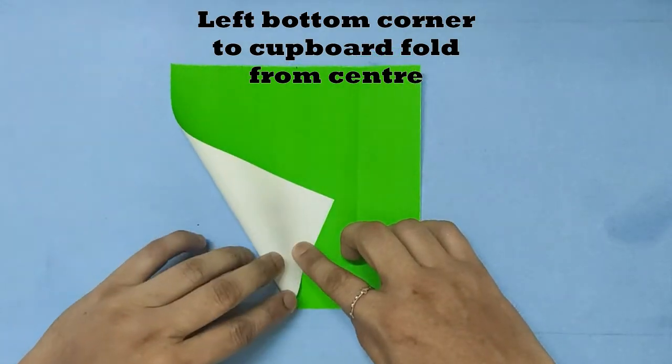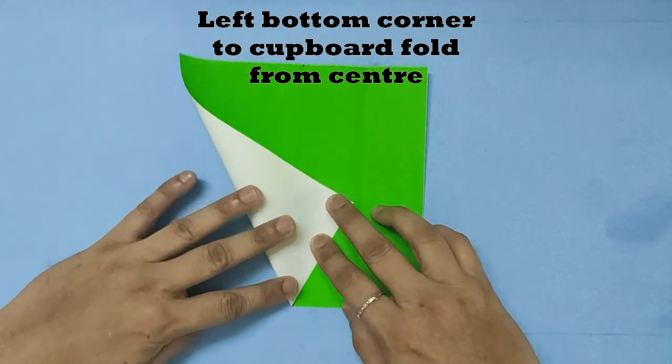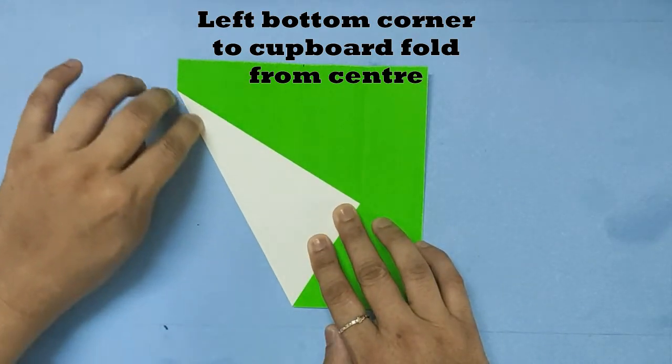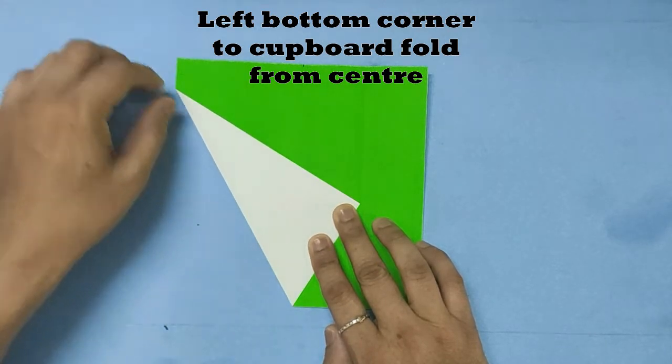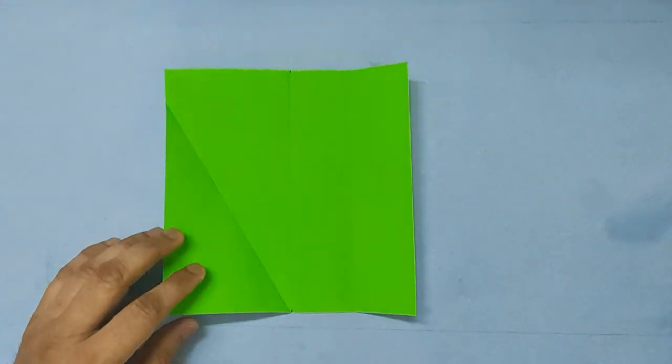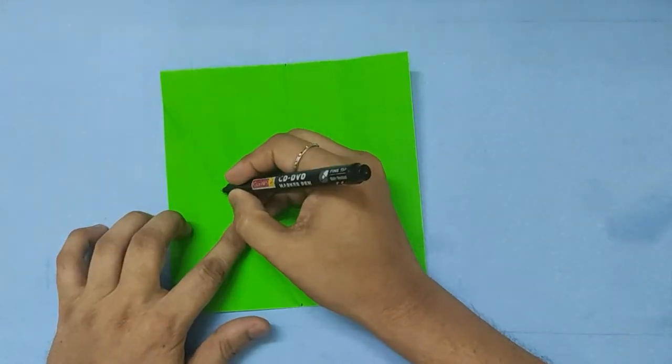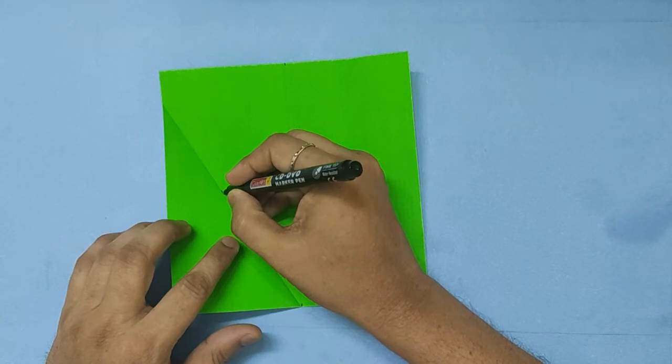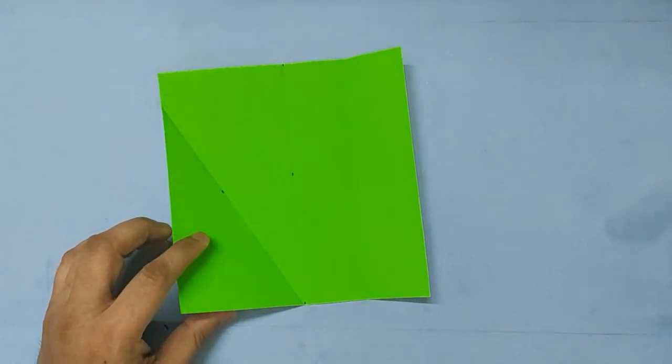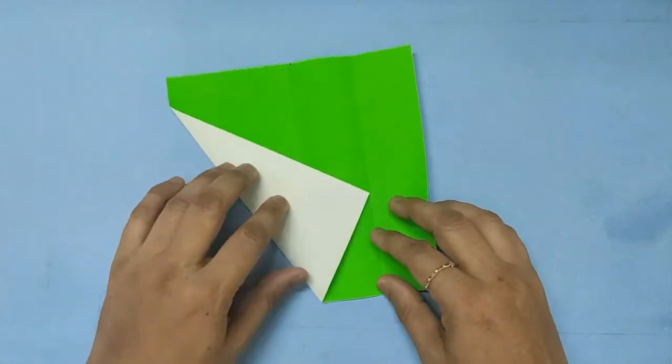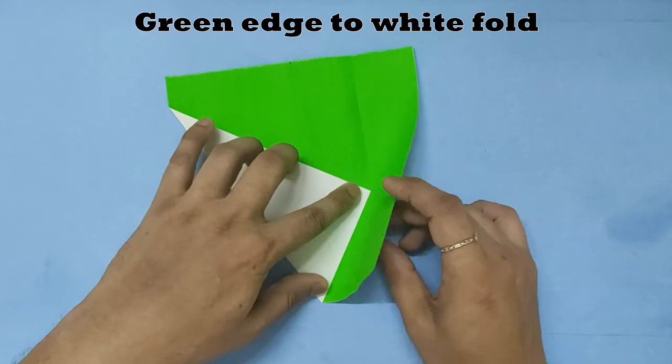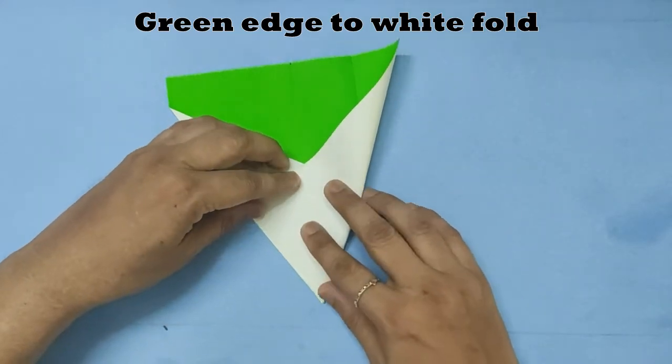We will take the left hand corner, fold it from the center, and align the corner with the cupboard fold line. That has given me 60 degrees or 120 degrees depending on which side you look. That is 90 degrees. Now we will bring the green edge to the white edge, folding from the center.